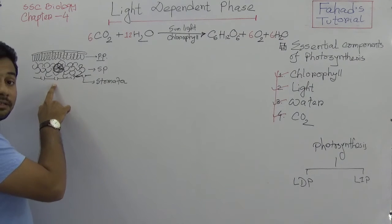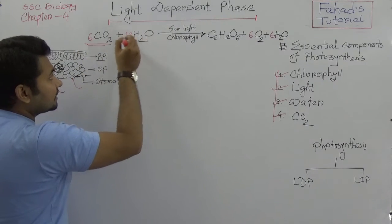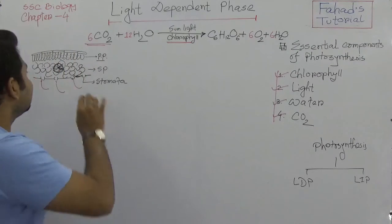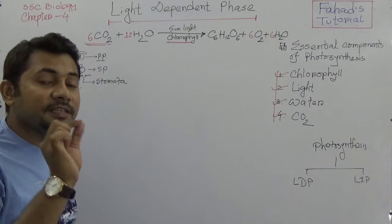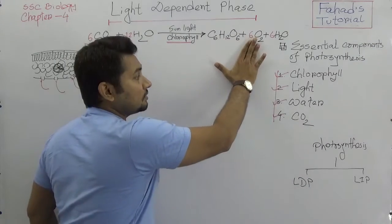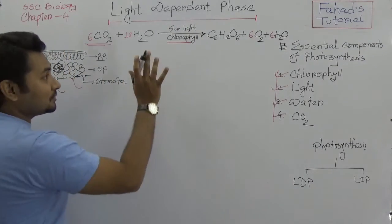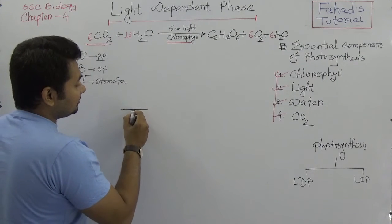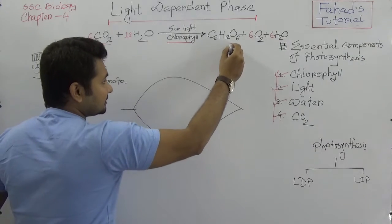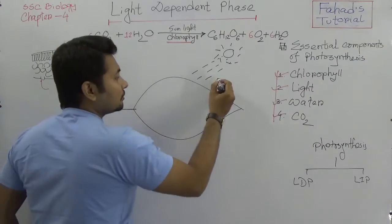Carbon dioxide enters through the stomata in the lower surface of the leaf, and water is available in the mesophyll tissues. Water and carbon dioxide react at the chlorophyll molecules, and all this process occurs in the mesophyll tissues of the green leaf — that is where photosynthesis takes place, producing glucose and the oxygen we breathe. Now let's understand what is going on in the light-dependent phase specifically.